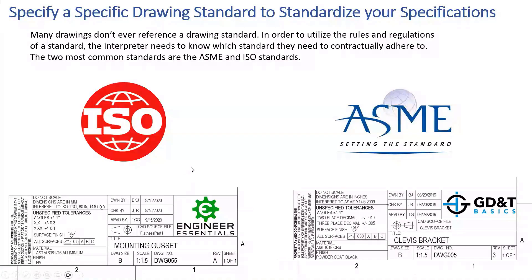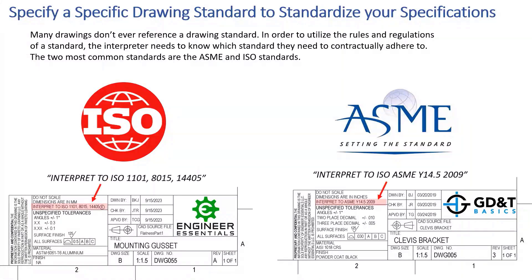The two most common standards are ISO and ASME. On the left we see an example calling out ISO 1101, 8015, and 14405 with the envelope symbol. On the ASME side, you can see the callout reading 'interpret to ASME Y14.5 2009.' Those are two good examples — just make sure you're making some attempt to define which standard the drawing adheres to.